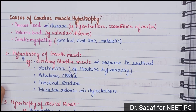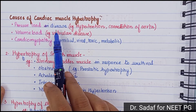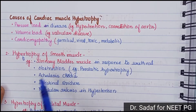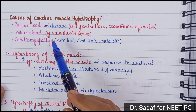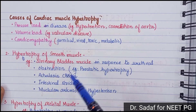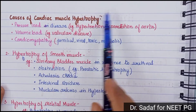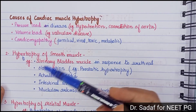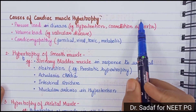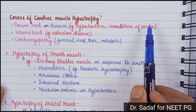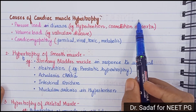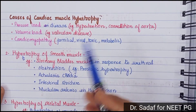Why does cardiac muscle hypertrophy happen? It is due to pressure load. In conditions like hypertension or coarctation of the aorta, blood cannot flow freely from the left ventricle through the aorta. As a result, pressure increases, then volume increases, and then cardiac hypertrophy occurs.